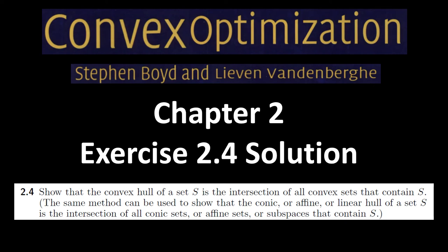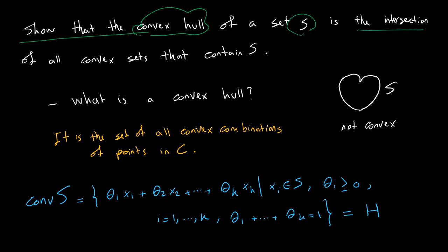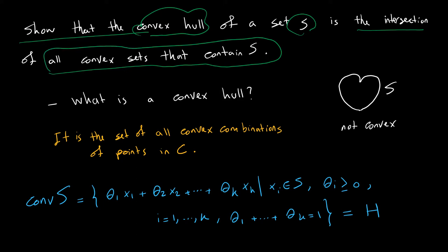Hello and welcome to my channel. This is the fourth question of chapter two and it's about convex hulls. We are going to find a new characterization for a convex hull. The statement says to show that the convex hull of a set S is the intersection of all convex sets that contain S.